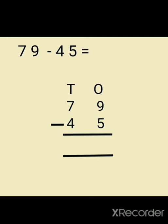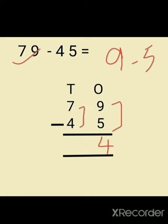Another example: seventy nine minus forty five. Starting from the right hand side, nine minus five which will be equal to four, and seven minus four which will be equal to three. So the answer will be thirty four.